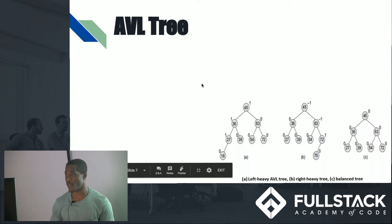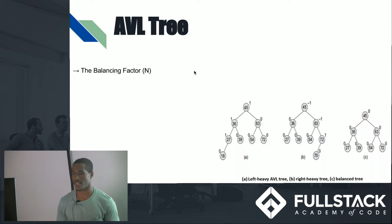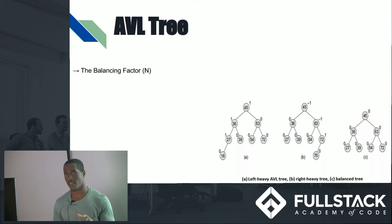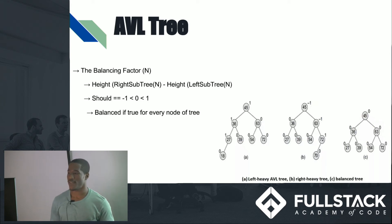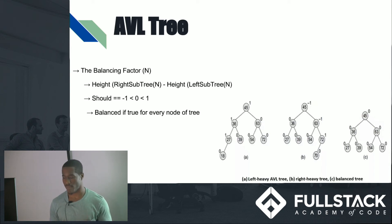The AVL tree is governed by the balancing factor. What that says is the height of node N's right subtree minus the height of its left subtree needs to be no less than negative one and no greater than one. The AVL tree is only considered balanced if the balancing factor is within that range. Otherwise, you need to go through tree rotations to refactor the tree so that it is balanced.